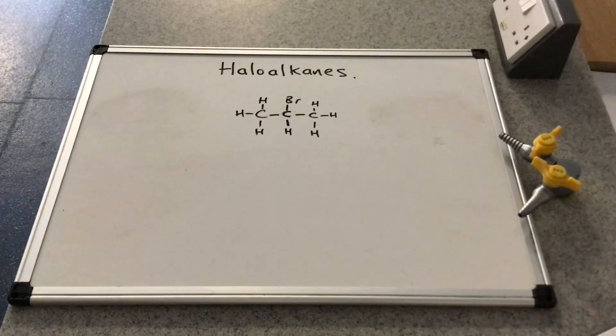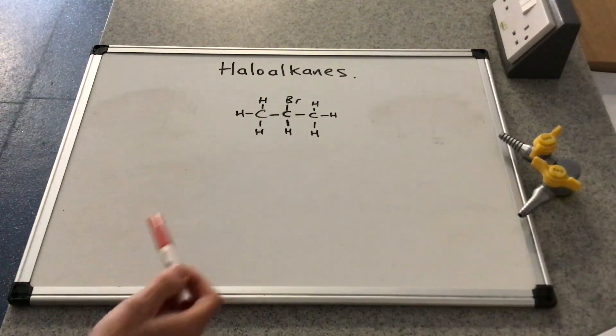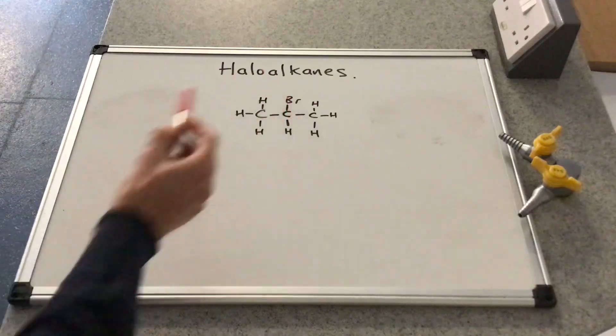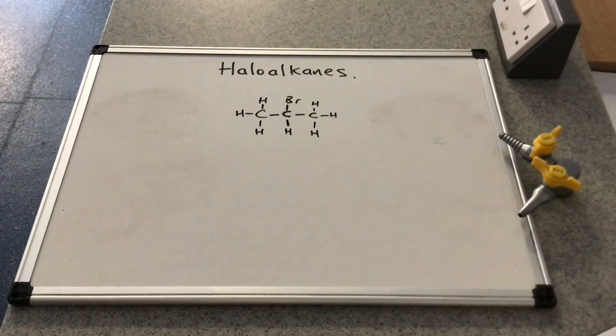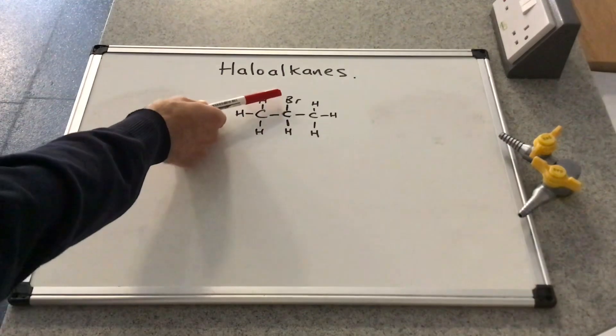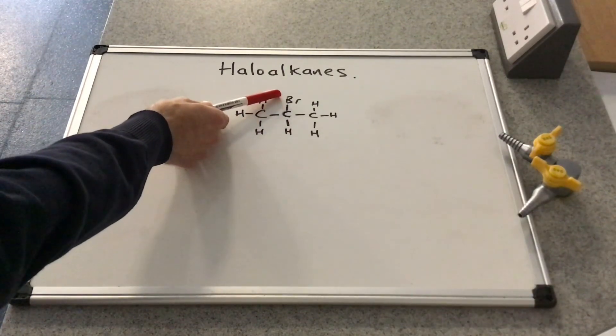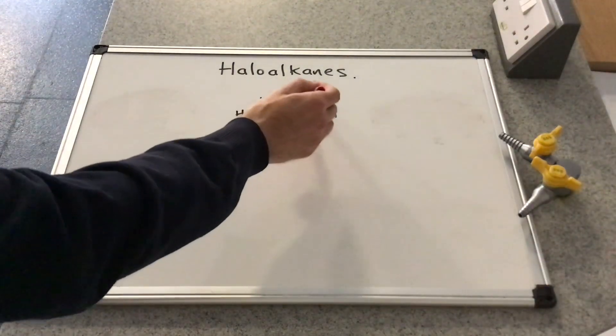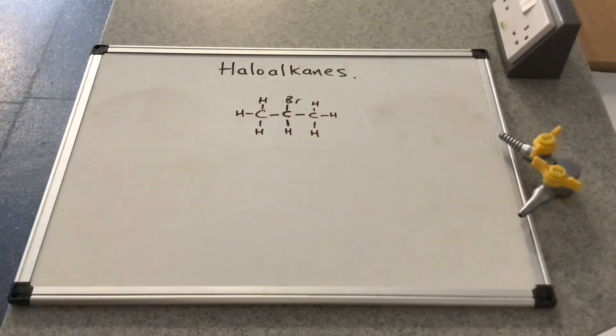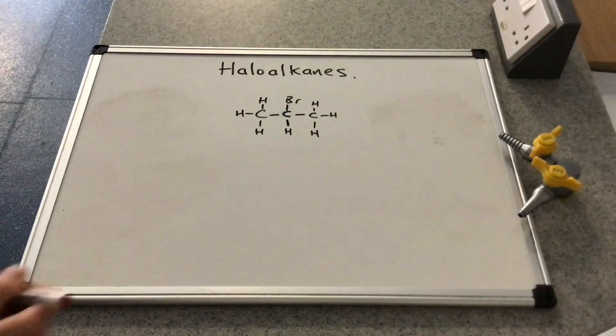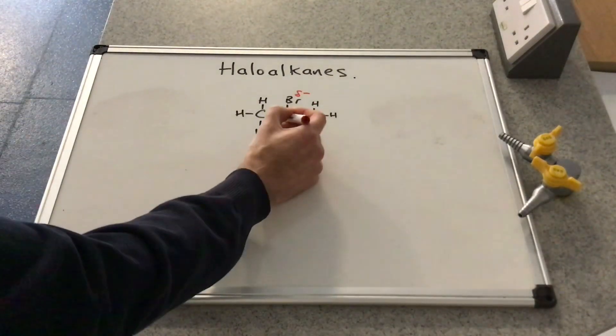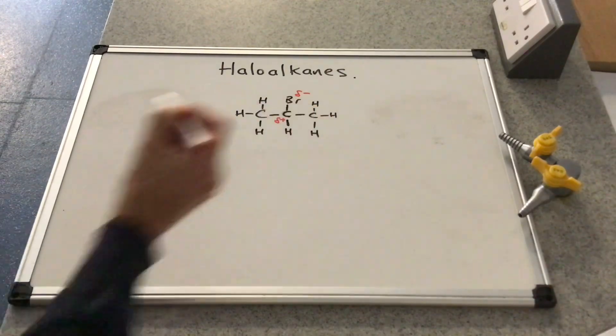So moving on to the reactivity of the haloalkanes, I'll just illustrate this using this 2-bromopropane molecule. So we've got this carbon-halogen bond in the molecule, and that's going to be polar because we've got a slightly more electronegative halogen atom bonded to a carbon. So the electron density will be more concentrated towards the halogen atom, so bromine in this case, which means that the bromine is slightly negative and the carbon is slightly positive.